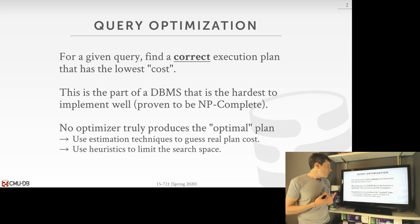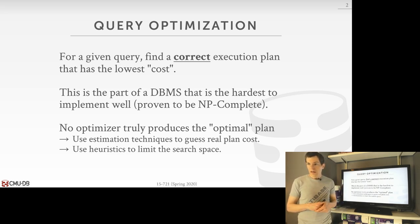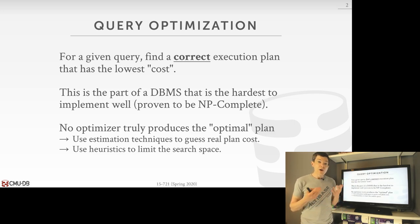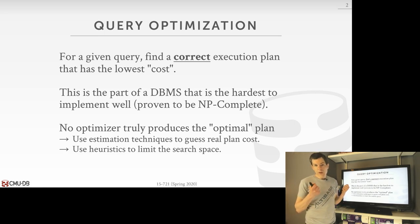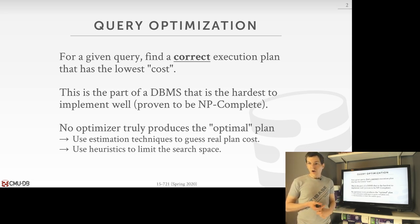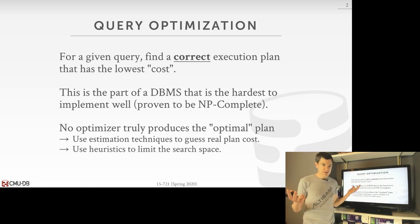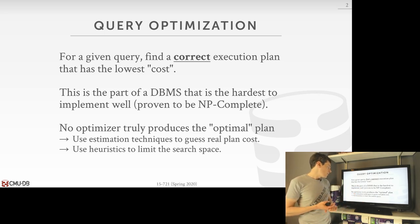The query optimizer is going to be the hardest component we'll have to implement in the database system, because finding an optimal or near-optimal query plan is super challenging — it's proven to be an NP-complete problem. This means that although the component is called the query optimizer, we're almost never going to find the optimal plan because it would take too long to look at all possible solutions.